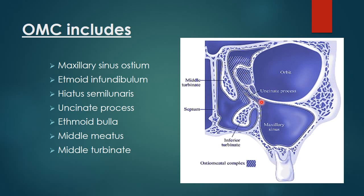The first component of the osteomeatal complex is the maxillary sinus ostium, or maxillary sinus opening. The second is the ethmoid infundibulum — this bony pathway. The curvature around the uncinate process is called the hiatus semilunaris, and this process projecting from the inferior turbinate is called the uncinate process. The middle turbinate and the middle meatus are also components of the osteomeatal complex, along with the ethmoid bulla.